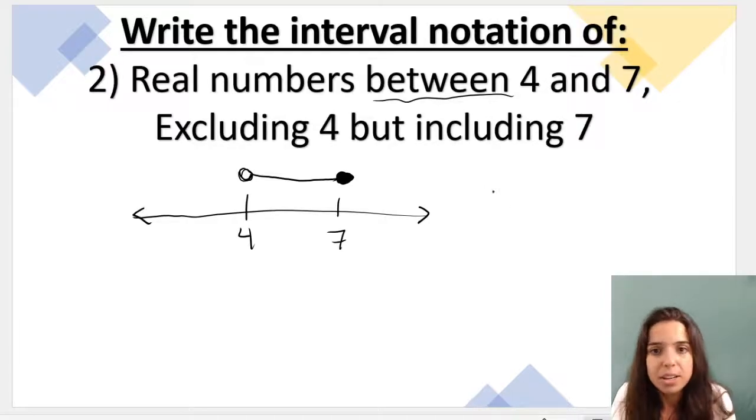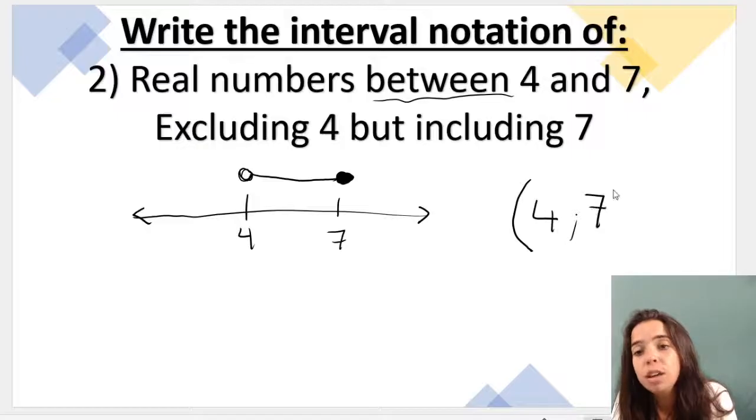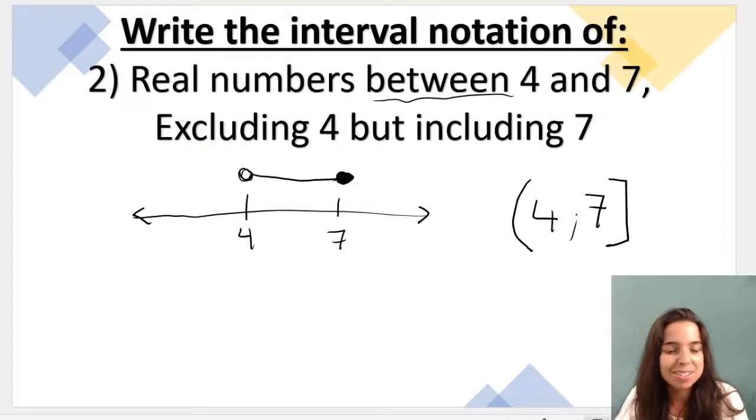How do I do this in terms of brackets? So I'm going to go, it's excluding 4. So that is a round bracket like that with a 4, then our semicolon, and it includes 7, which is our square bracket. And there you go. Now you can do interval notation.